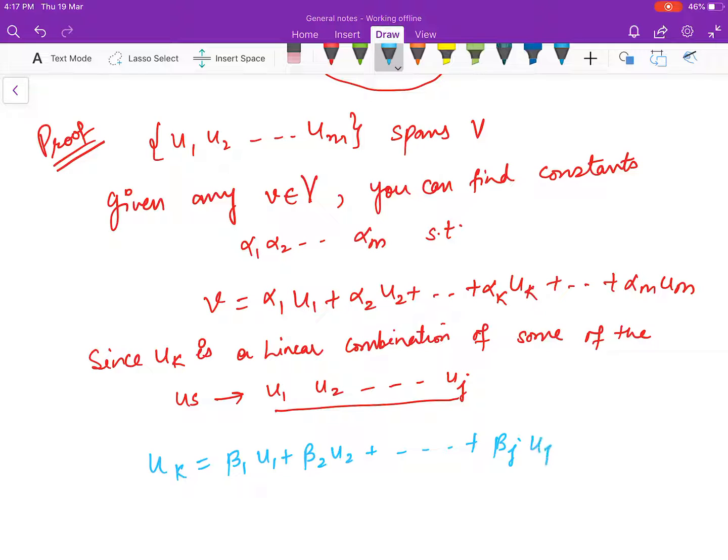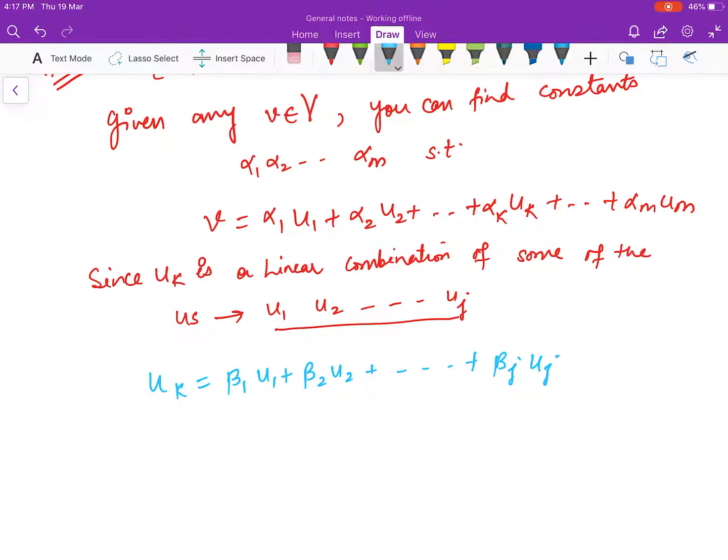Now in place of uk you can write this. So you have v as alpha_1 u1 plus alpha_2 u2 plus ... plus alpha_k into (beta_1 u1 plus beta_2 u2 ... plus beta_j uj) plus ... plus alpha_m um.